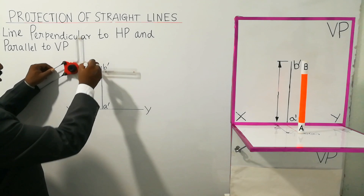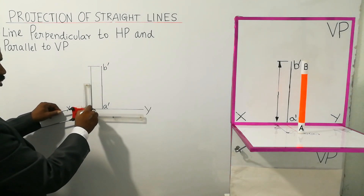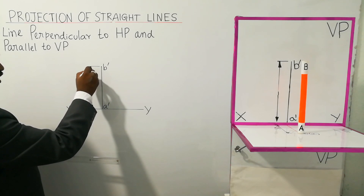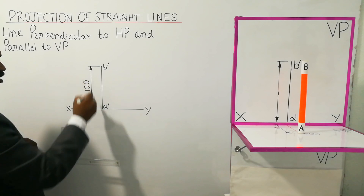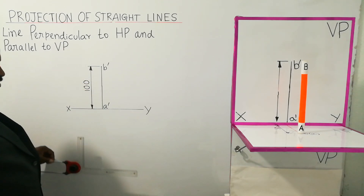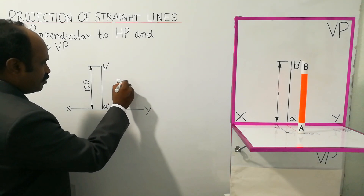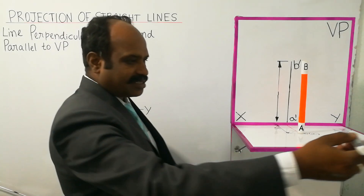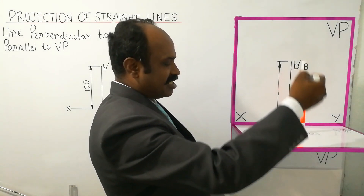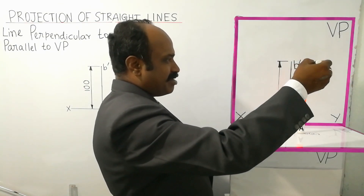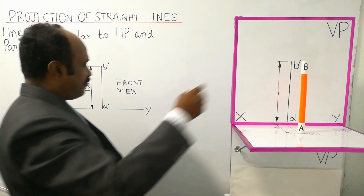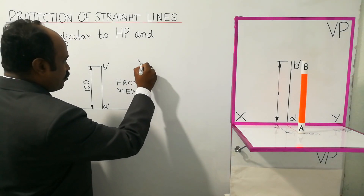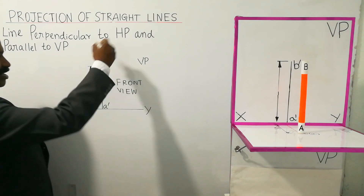That is the dimension — the size. The length of the straight line in the view, A' B', is the front view. Why is this the front view? This is the direct view of the observer. A point projected on the vertical plane is A', and B point projected on the vertical plane is B'. The vertical plane is the VP, so this is the front view.